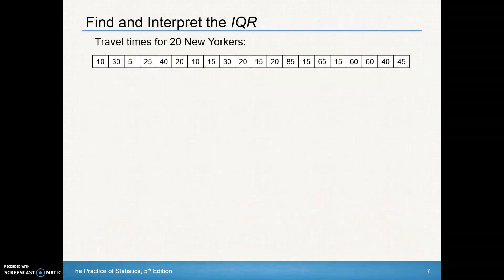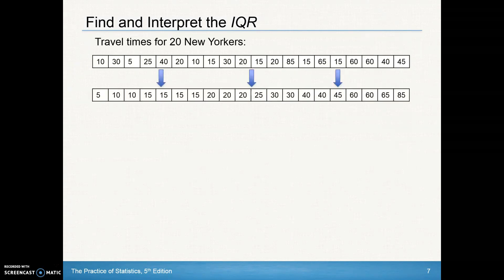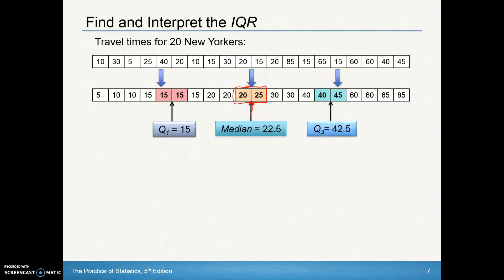Here are those 20 commute times for New Yorkers. First, order the data from smallest to largest. Locate the median at 22.5, which is between the two middle values. Our first quartile and third quartile are the middle of the bottom half and top half respectively.